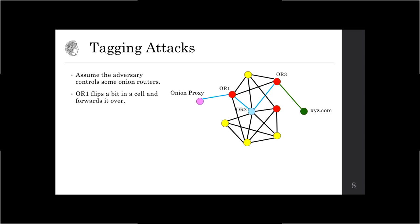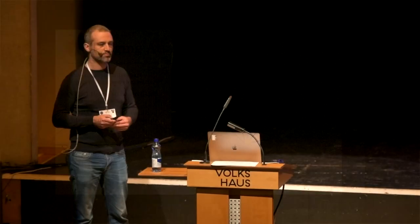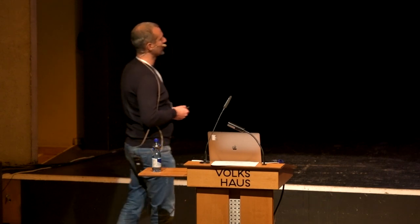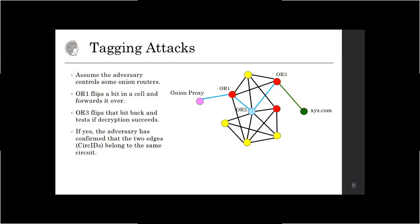Essentially, in R1 it flips a bit in the cell and forwards it. Then in R3, it flips back that bit and checks whether the encryption works. Because of the well-known malleability of counter-mode encryption, these two bit flips cancel each other out. The plaintext in the cell payload is restored to its original value, integrity passes, and encryption succeeds. At that point, the adversary has confirmed that the two edges incident at R1 and R3 belong to the same circuit. Since R1 can see who the user is and R3 can see the destination, the user has been completely de-anonymized.